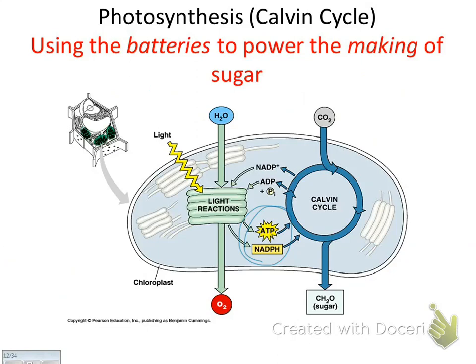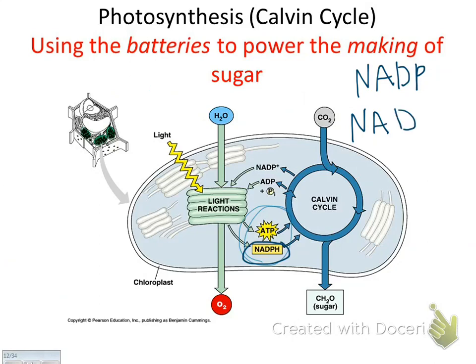NADPH — these are letters you haven't seen before, so pay attention. Think about NADPH like a school bus that carries electrons. NADP+ is an empty school bus. When a first electron gets on, it removes the positive. When a second electron gets on, it becomes NADPH because it's a hydrogen electron. So NADP+ is an empty school bus, and NADPH is a school bus carrying two electrons — the maximum amount.